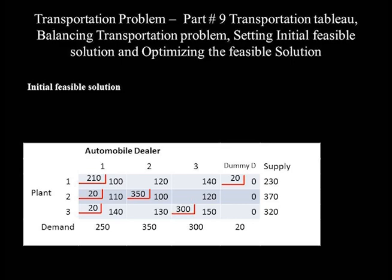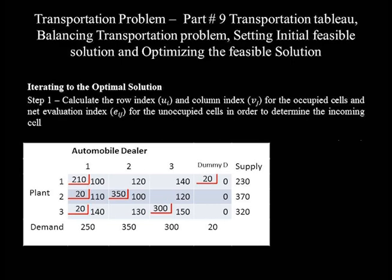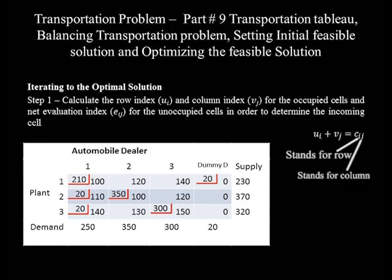This initial feasible solution must go through iteration steps to make it optimal. Step 1 of iteration: calculate the row index u_i and column index v_j for the occupied cells, and the net evaluation index e_ij for the unoccupied cells. The formula is: row index u_i plus column index v_j equals unit cost c_ij of that cell. The subscript i stands for row and j stands for column, so c_11 refers to the unit cost at the intersection of row 1 and column 1.